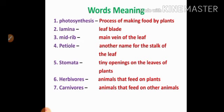Fifth one: stomata. Stomata means tiny openings on the leaves of a plant. Sixth one: herbivorous. Herbivorous means animals that feed on plants. Seventh one: carnivorous. Carnivorous means an animal that feeds on other animals.